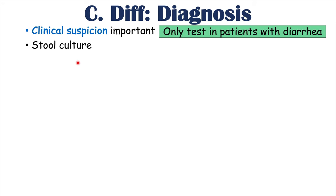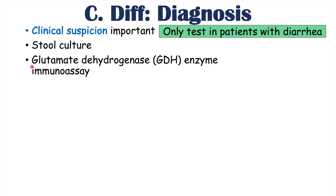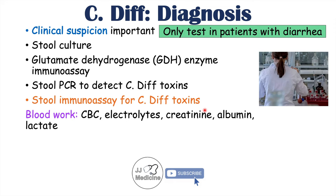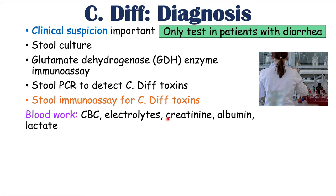Ways of diagnosing C. diff include stool culture — though results take time — a glutamate dehydrogenase (GDH) enzyme immunoassay, stool PCR to detect C. diff toxins, and a stool immunoassay for C. diff toxins. Clinicians should also check blood work including a CBC for elevated white blood cell count, electrolytes for imbalances, creatinine for potential acute kidney injury, albumin for hypoalbuminemia, and lactate levels as a sign of more severe presentation.